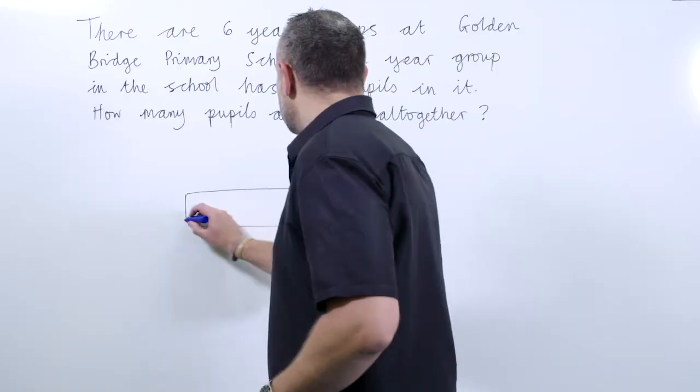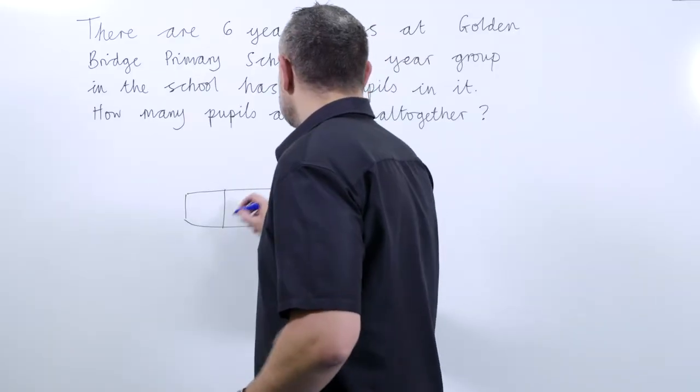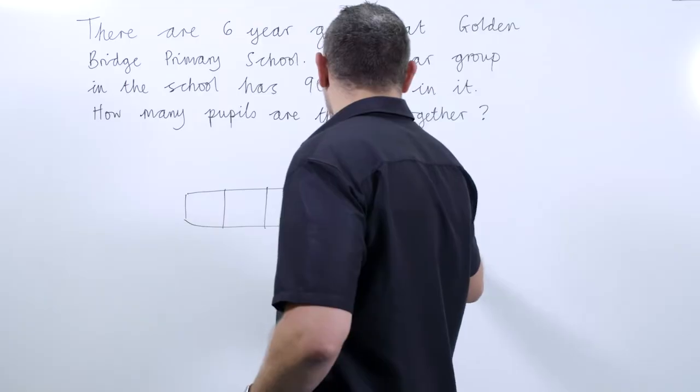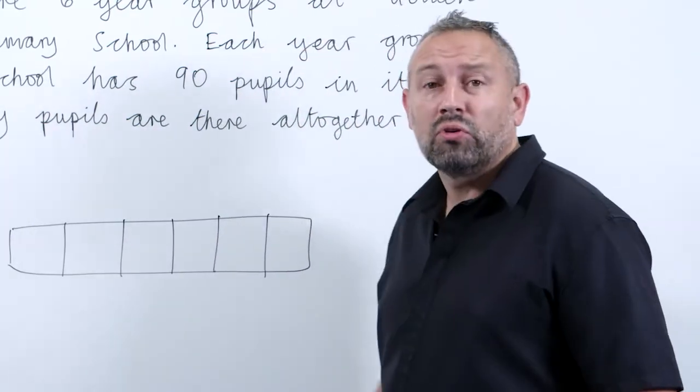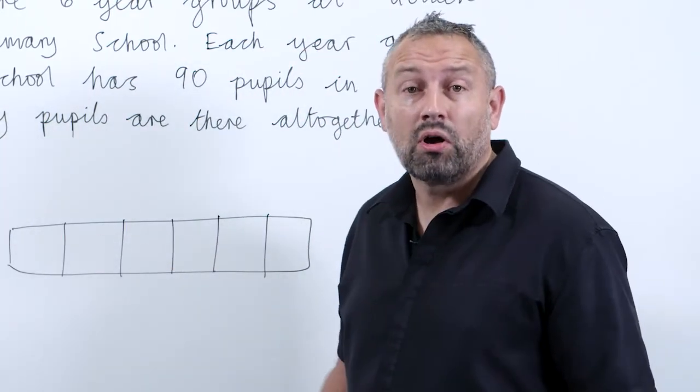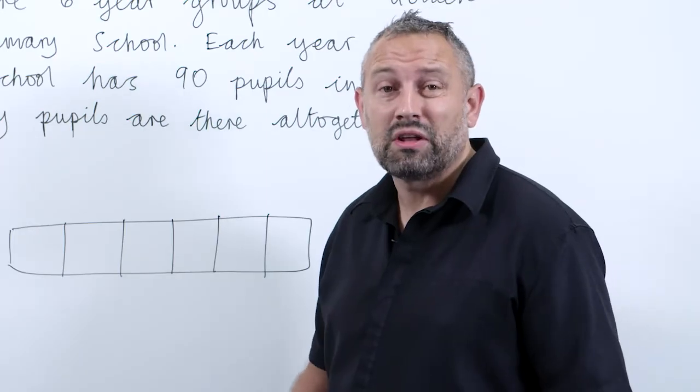So we can draw the bar. Again it's important that we keep each section of the bar, each part, fairly proportional so the children can see the relationship there.